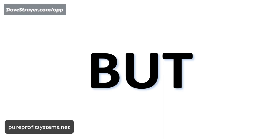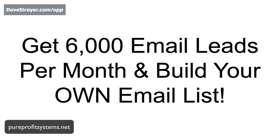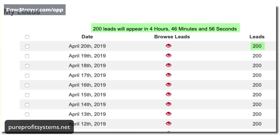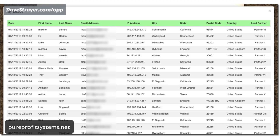But the good news is there is a way to get 6,000 email leads per month and build your own email list — 6,000 leads per month — so that you can send for pennies, literally pennies per email. What you get is 100 to 200 leads per day, every day. These leads include first name, last name, email address — everything you need to send solo ads to your list.